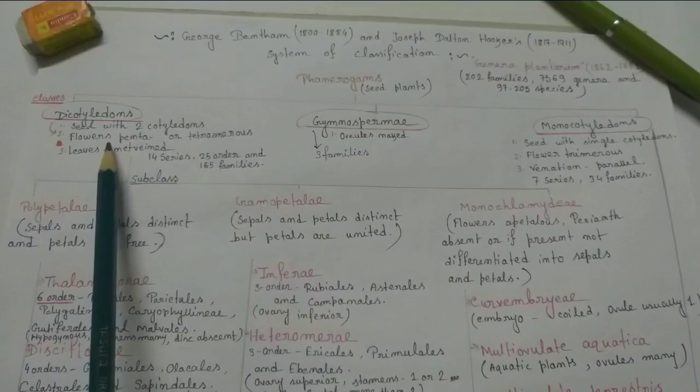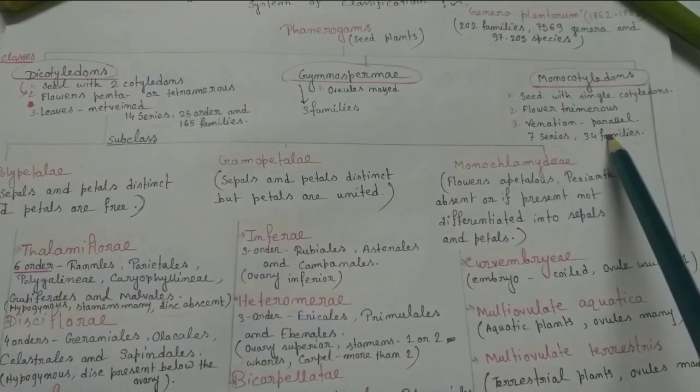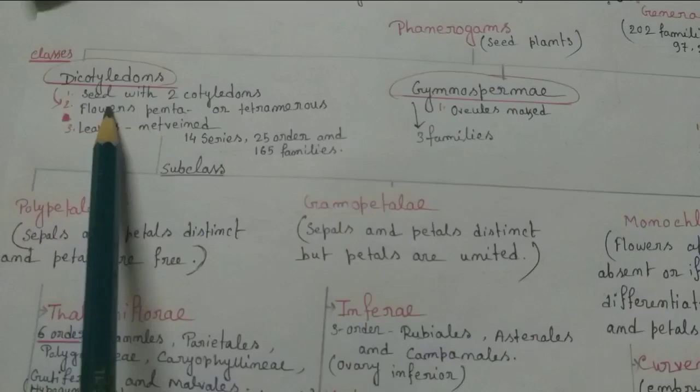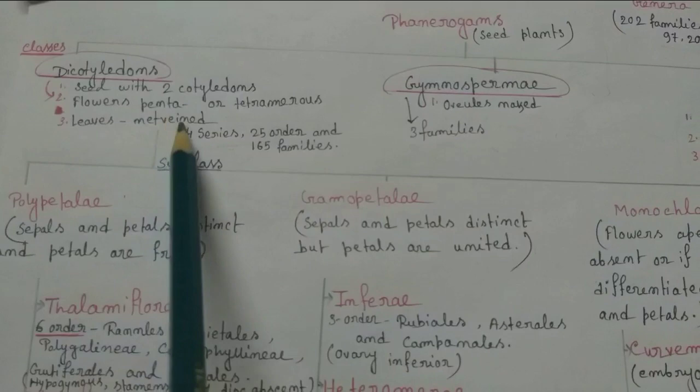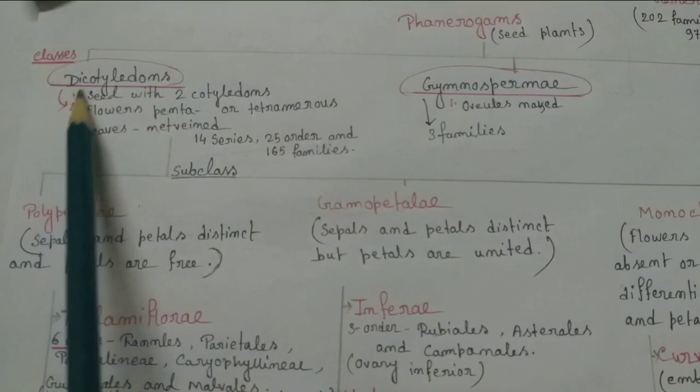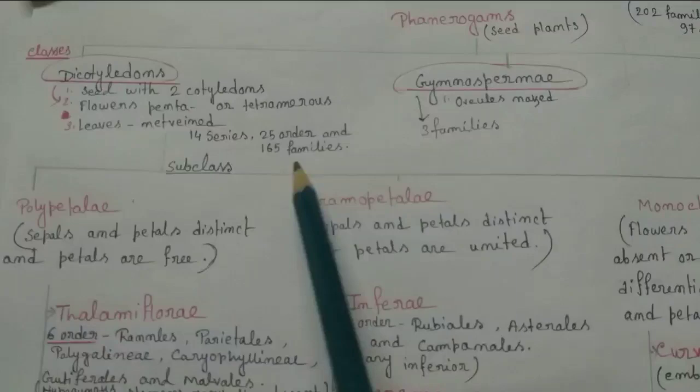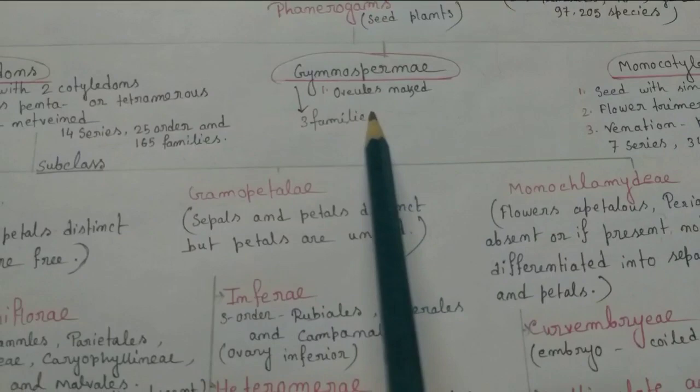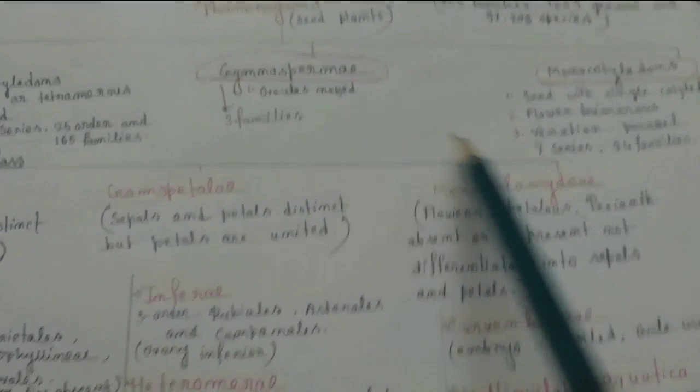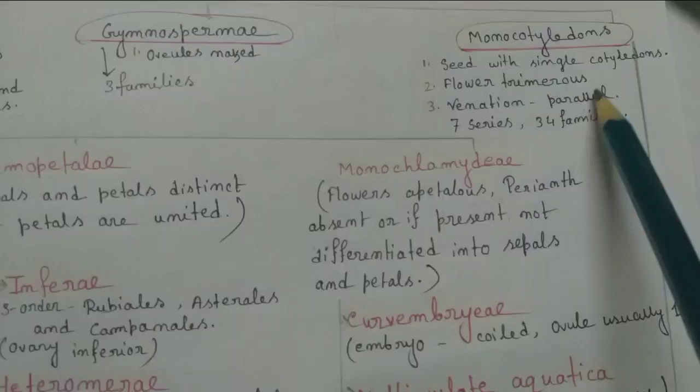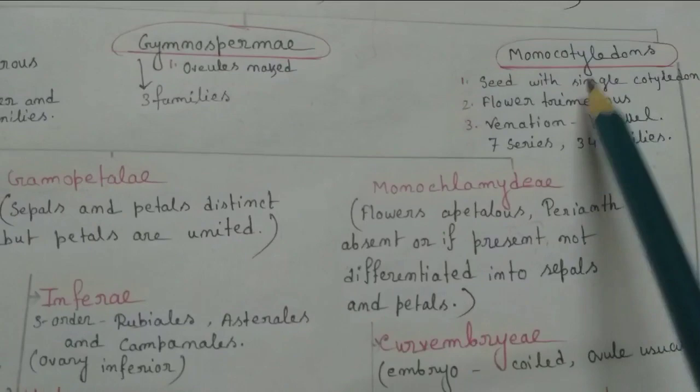They divided the seed plants or phanerogams into three classes: Dicotyledons, Gymnospermae, and Monocotyledons. For Dicotyledon, the seed with two cotyledons, flowers penta or tetramerous, and the leaves venation type is net veined. This dicotyledon class contains 14 series, 25 orders, and 165 families. Gymnospermae contains three families. For the monocotyledons, the seed with single cotyledon, flowers trimerous, venation pattern parallel. This monocotyledons class contains seven series and 34 families.